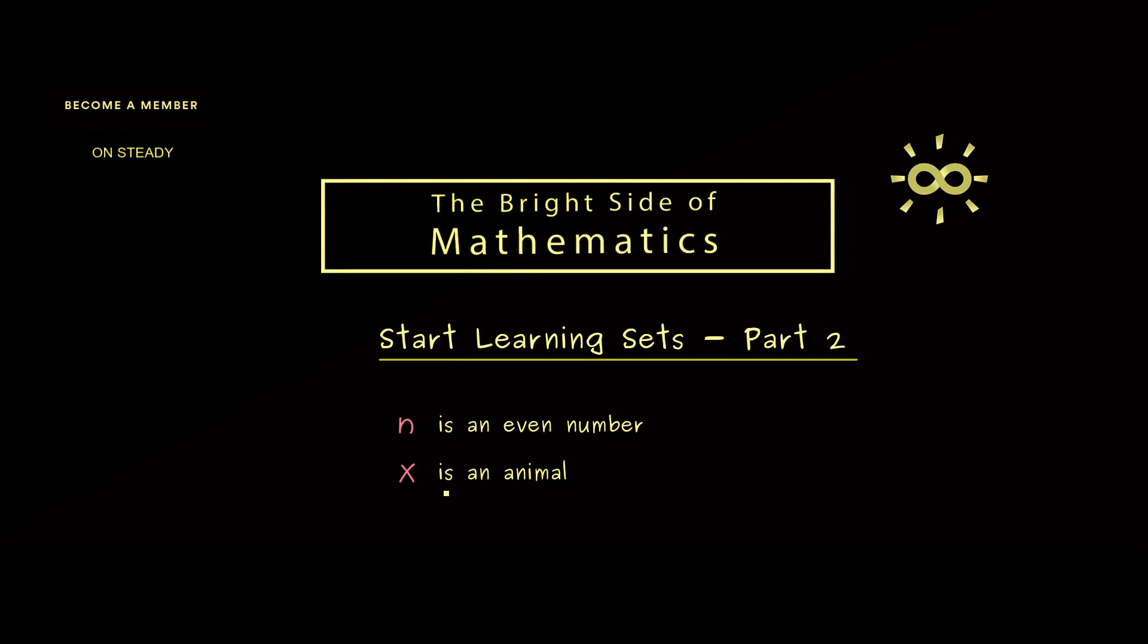We have the same thing for the next sentence 'x is an animal.' It has no well-defined truth value when we don't know what x is. It's also the same for a more mathematical example: y + 8 = 9.